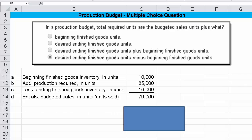Okay, let's take a look at this production budget multiple choice question, and you see the question in front of you. In a production budget, total required units are the budgeted sales units plus what?